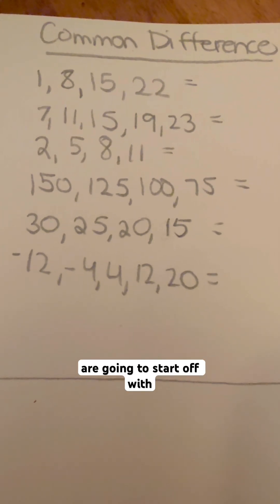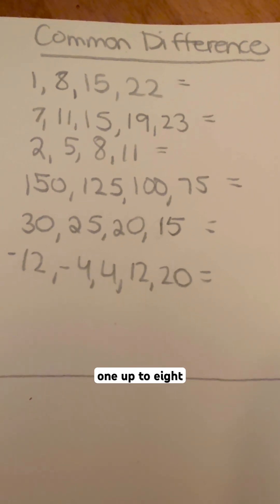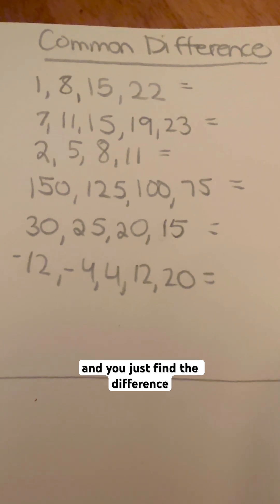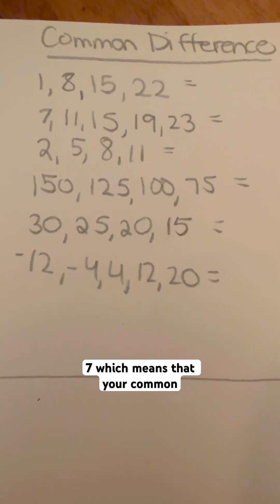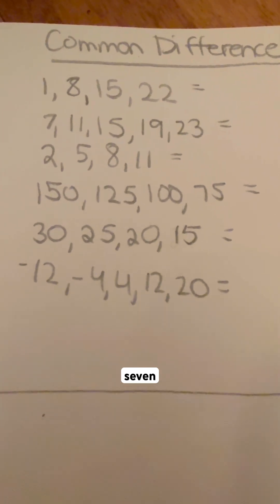So you are going to start off with the first one. You're going from 1 up to 8, so you're increasing, you're adding the number. And you just find the difference between the numbers. So 8 minus 1 is 7, which means that your common difference is going to be adding 7 every single time.